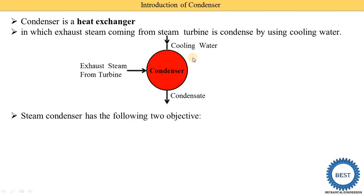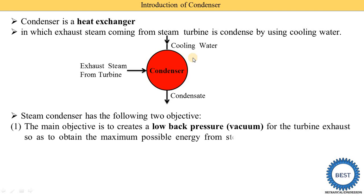Now we understand the objectives of steam condensers. There are two main objectives. The first objective is to create low back pressure — meaning vacuum — for the turbine exhaust, so as to obtain the maximum possible energy from the steam and thus to secure high efficiency. In a turbine there is some exhaust pressure. If we reduce this exhaust pressure from atmosphere pressure down to vacuum pressure, we are able to achieve more work. By using the condenser we can maximize the work done from the turbine.